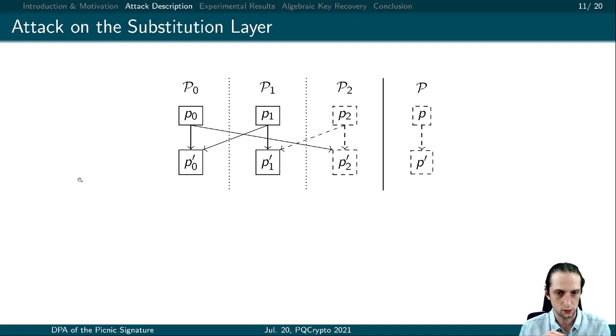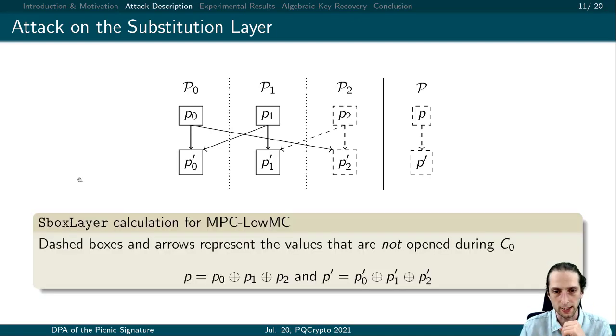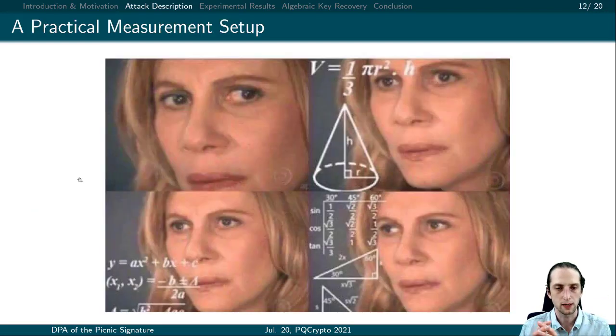Therefore, what we need is to formalize these unopened variables using the open ones. Again, we focus on a single challenge where the states p0 and p1 are opened. Using the correctness of these equations, we can successfully implement the key guess. In summary, what we have shown is that we can exploit the MPC-in-head structure of Picnic signature scheme by focusing on two different parts of the algorithm.